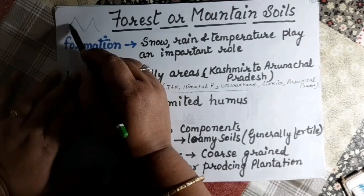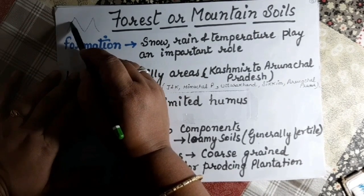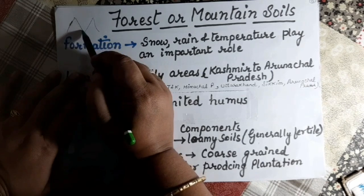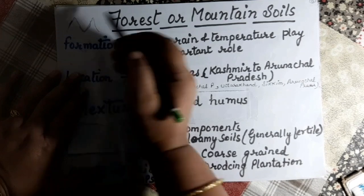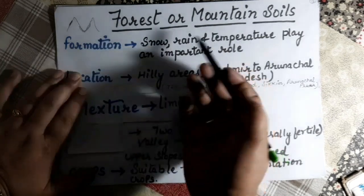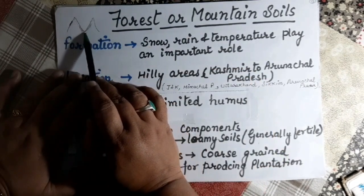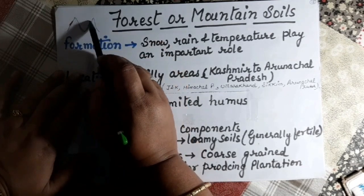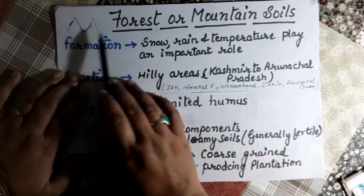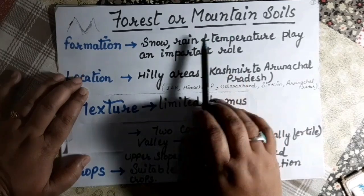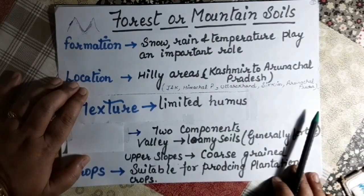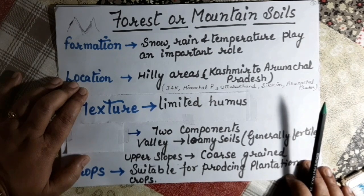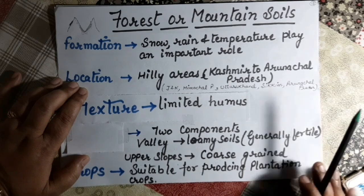In mountainous regions, the top layer of soil on the steep slope is washed away. Material settles in the valleys, making the valley portion generally fertile. In snow-covered areas the soils are acidic and have limited humus. However, in valley portions the soils are generally fertile in nature, while on the upper slopes the soil quality is lower.